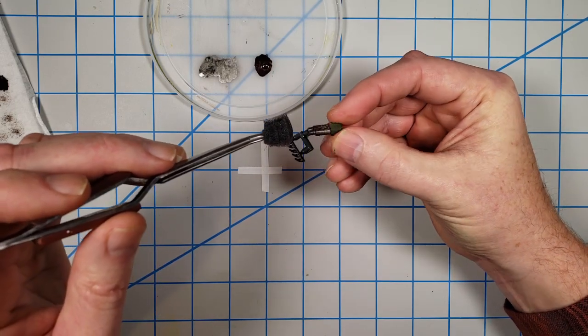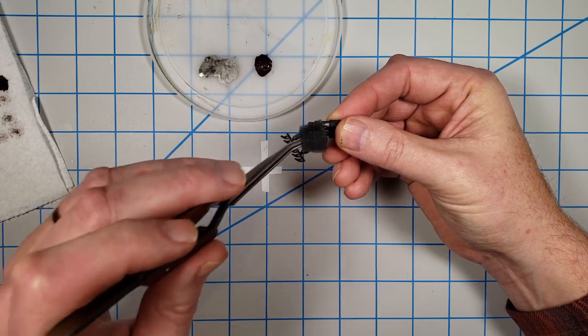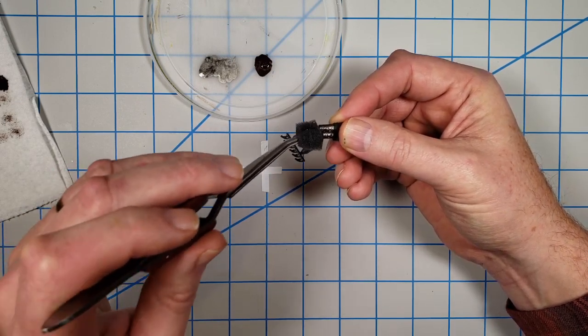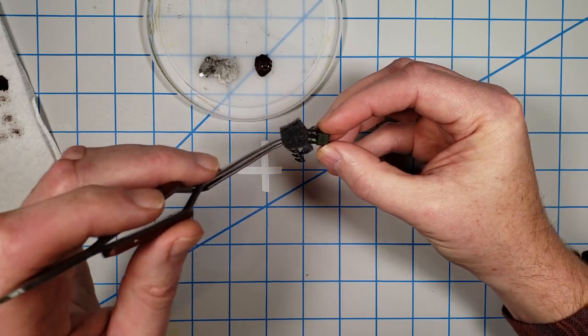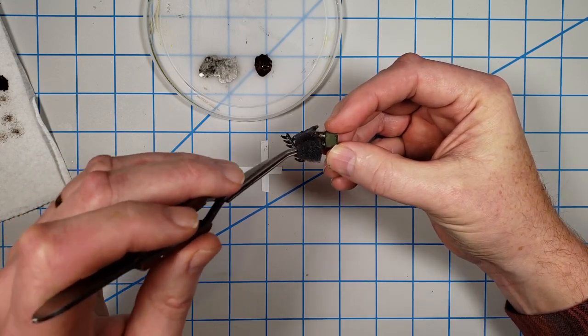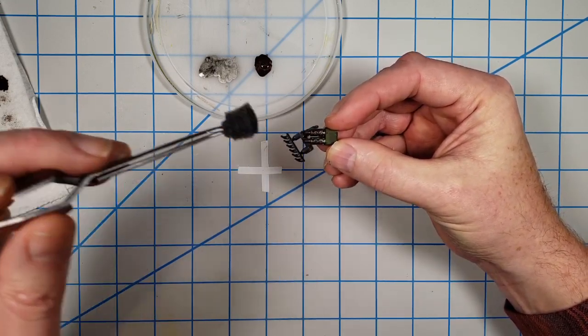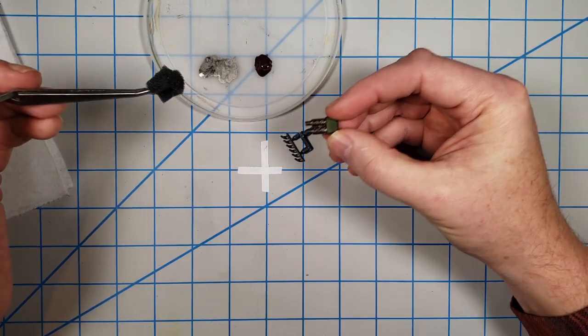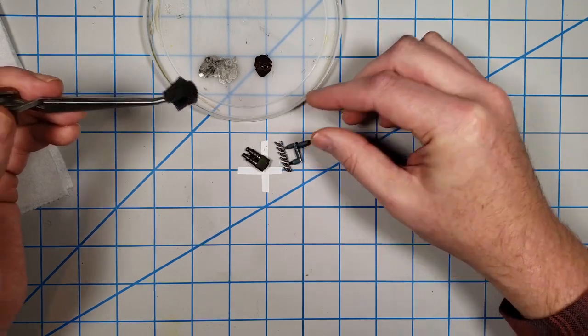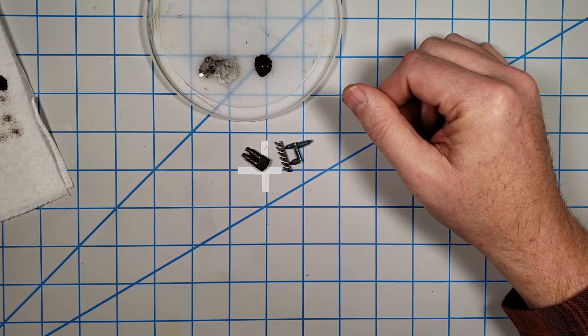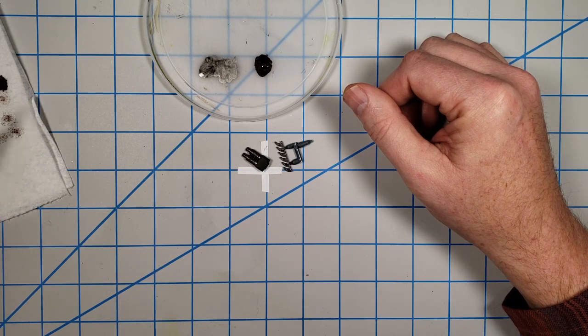But it still imparts some color. Again, you can go heavier, you can go lighter, whatever you prefer. Pick up a little more. I would recommend if you're using this technique that you start off with less paint on your sponge and then if you feel like you need to add more, go ahead and do it because it's usually easier to add than it is to take away when it comes to paint.